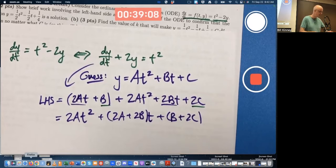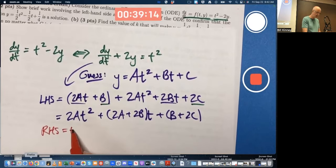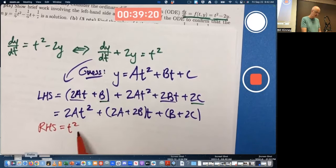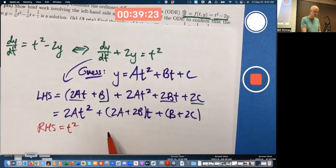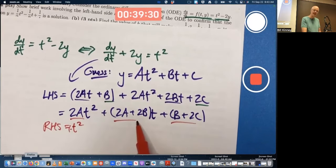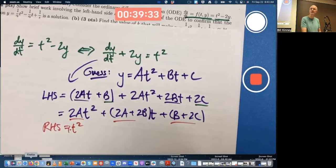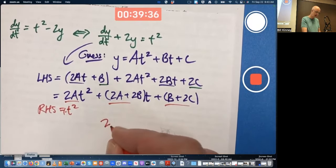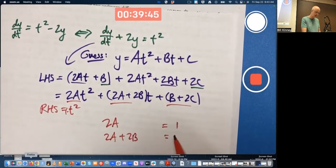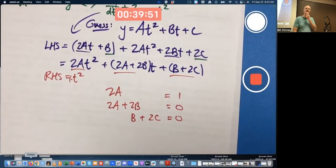What's the right-hand side of the differential equation? Well, you see, it's just t squared. What do I want for this to be a solution? I want these two functions to always be equal, no matter what t is. The only way that's going to happen is if 2a is 1, that thing is 0, and that thing is 0. System of equations in a, b, and c. So, 2a is 1, the coefficient of t squared there. 2a plus 2b is 0, and b plus 2c is also 0. That's the system of linear equations I need to solve for a, b, and c.